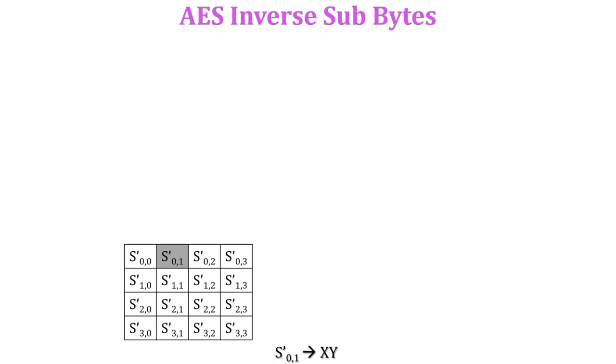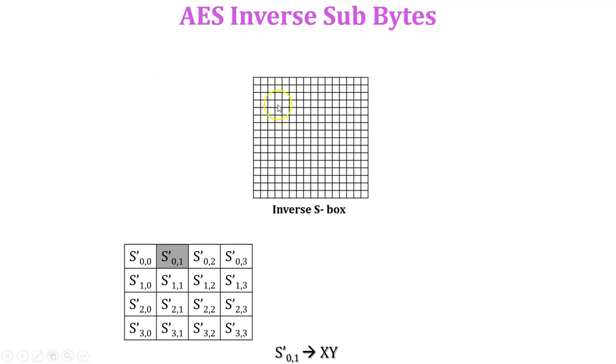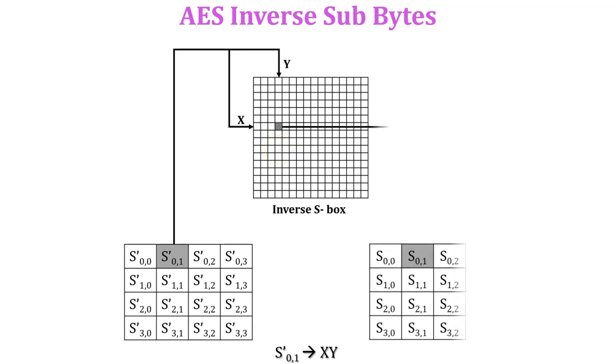How can we perform AES inverse subbytes on this particular value? Look up this value in the inverse s-box table. Here X indicates the row and Y indicates the column in inverse s-box. Where X and Y intersect in the inverse s-box table, that intersect value is replaced with the value of s-01 position. This is called inverse subbytes.